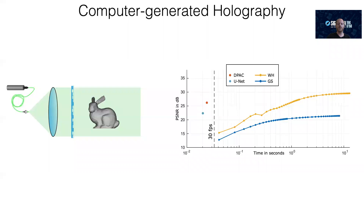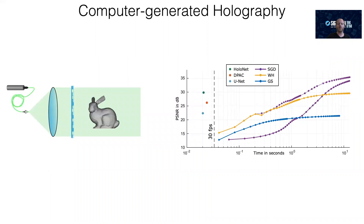In our ETEC, we demonstrate that a stochastic gradient descent approach that uses a camera in the loop achieves the best quality of all methods, and we've developed a neural network architecture called HoloNet that achieves almost the same quality in real time.